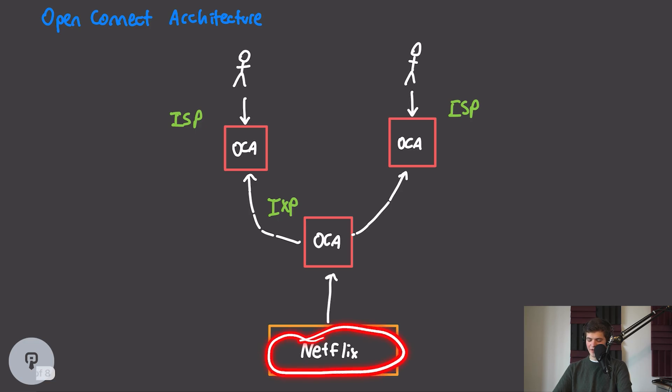We have our Netflix data center, which is sort of the source of truth for all content. The first place that this content is going to get replicated to is the internet exchange points. So, whenever new content is released or updated, or the viewing patterns of that content changes, Netflix can push updates to any of these Open Connect appliances that are deployed in these internet exchange points. This is done on a nightly basis, and is done during off-peak times to make sure that this download process doesn't interfere with actual Netflix traffic.